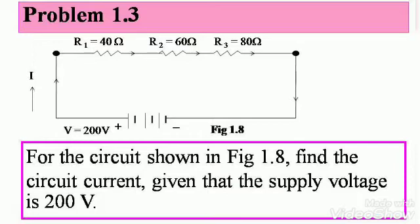For the circuit shown in figure 1.8, note down figure 1.8. Find the circuit current given that the supply voltage is 200 volts. You can see there are 3 resistors here: R1 is 40 ohms, R2 is 60 ohms, and R3 is 80 ohms. V is 200 volts and you need to find the current through it.